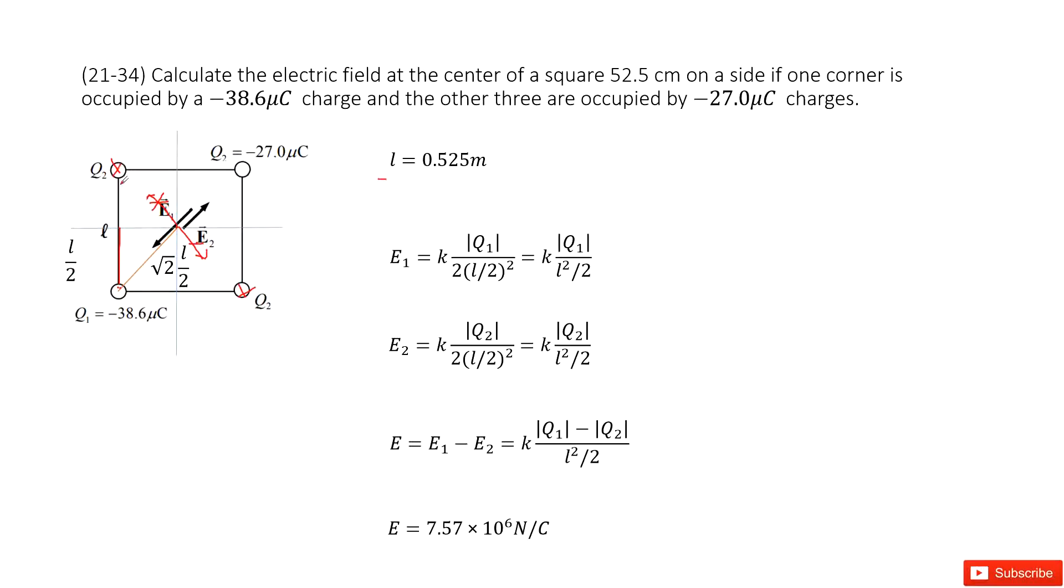L over 2, just half of the square side length. And this side length is also L over 2. So the side length for this one is square root 2 L over 2. This is a triangle.